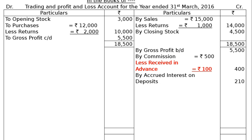Next is accrued interest on deposit Rs 210. As per part 3, interest of Rs 210 is yet to be received on deposits — that is accrued interest on deposits or interest receivable Rs 210. And interest on bank overdraft Rs 300 is to be paid — that is the next concept of adjustment.